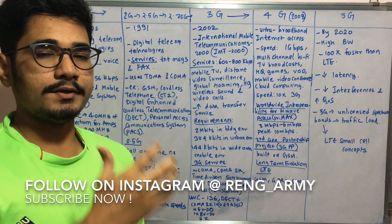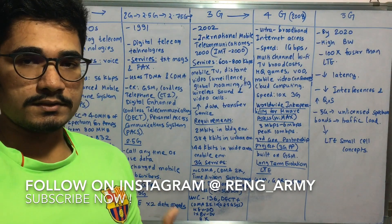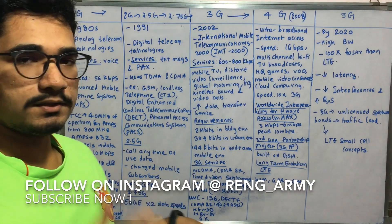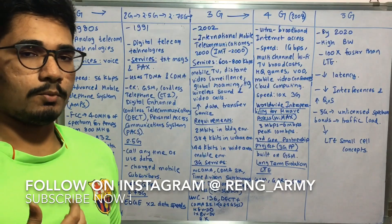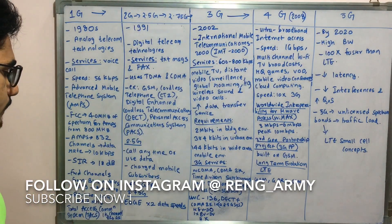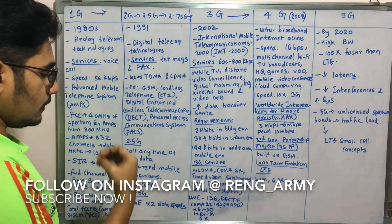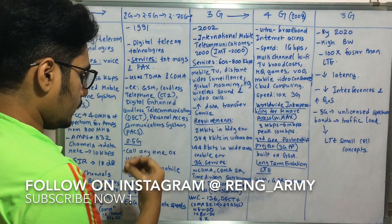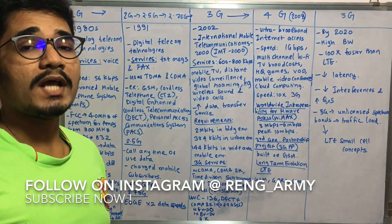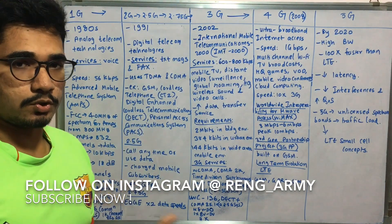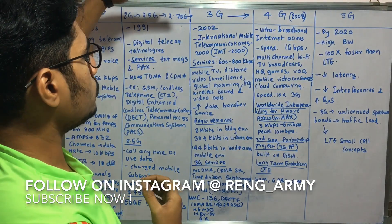Examples of 2.5G include GPRS (General Packet Radio Service), which came into wider use around 2007–2008, providing mobile data transfer. Under 2.75G, you have EDGE technology, which aims to provide data speeds two times faster than 2.5G.